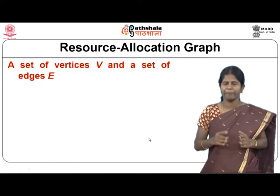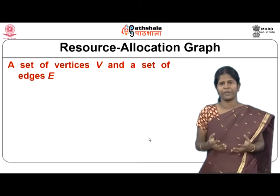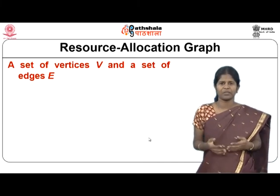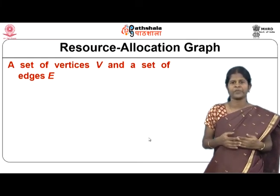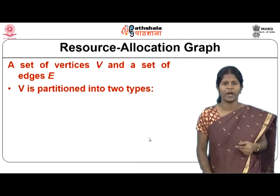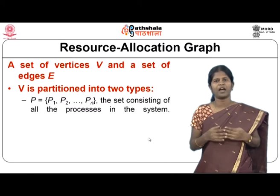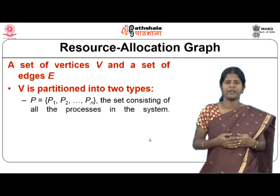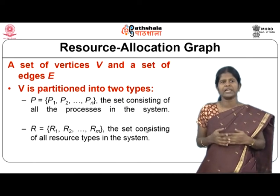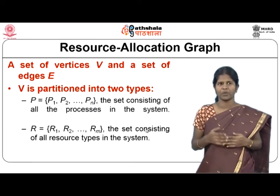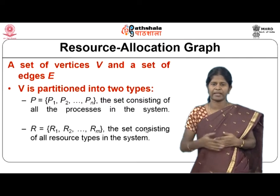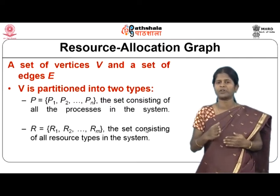A system can be depicted using a resource allocation graph. Like any graph, it has a set of vertices and edges. Vertices are of two types: the set of all processes P = {P1, ..., Pn} and the set of all resource types R = {R1, R2, ..., Rm}. Each resource type in the graph corresponds to a different category of resource.